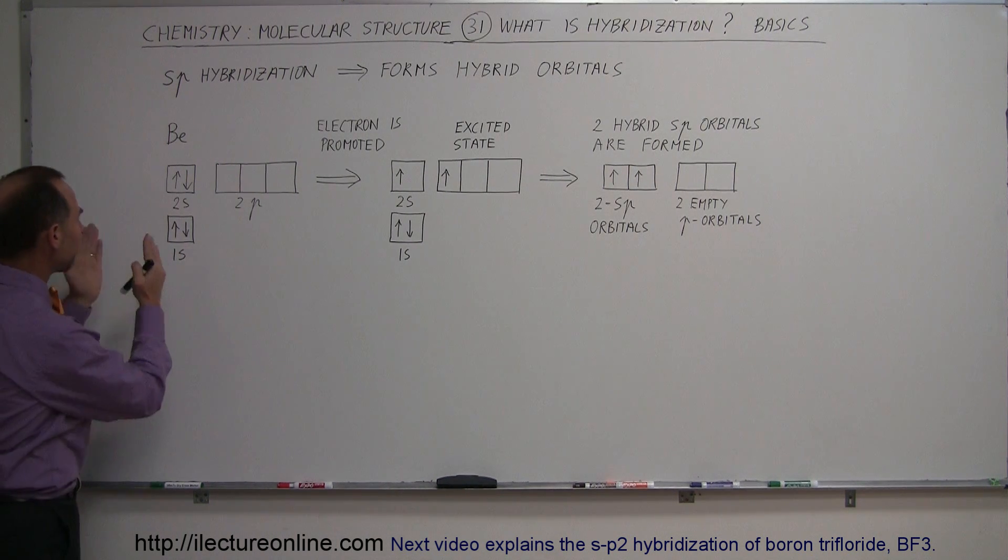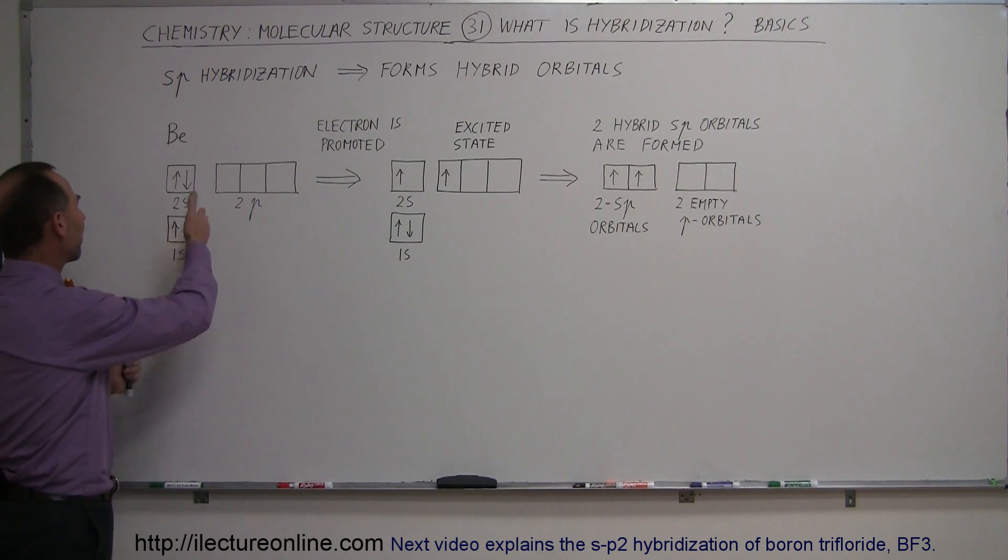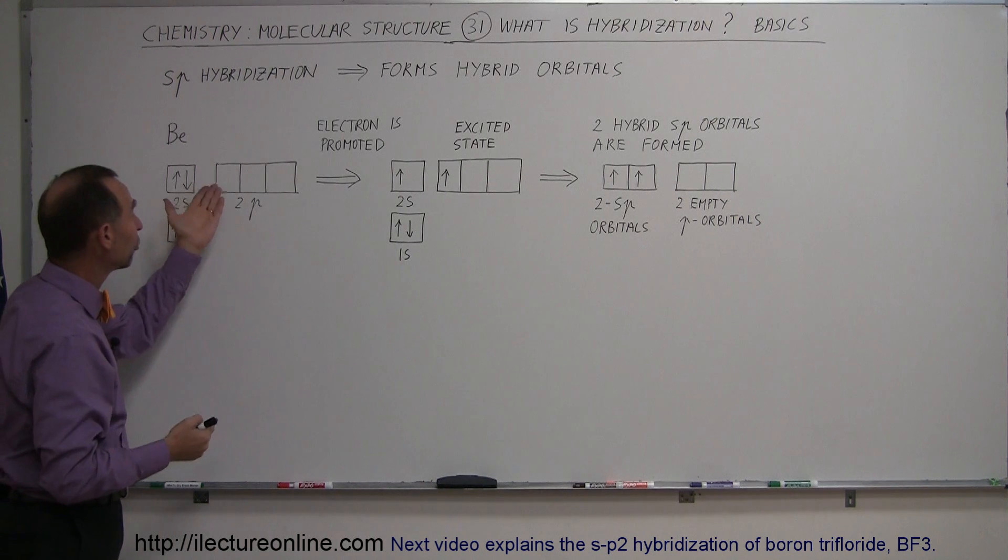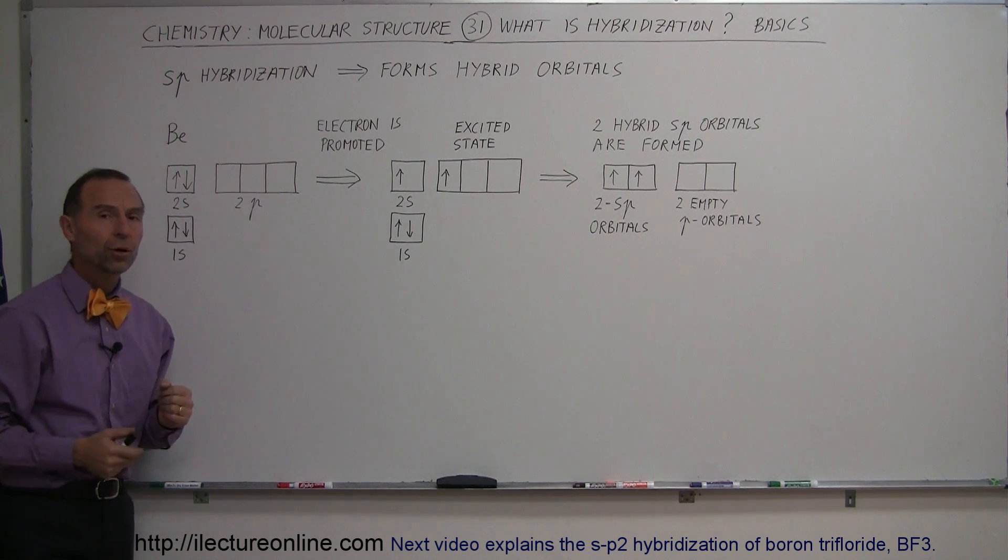So basically, from that perspective, you wouldn't expect beryllium to make many bonds because both of the orbitals that it has are already filled and it has no electrons in the 2p orbitals.